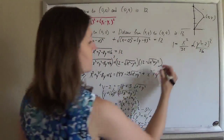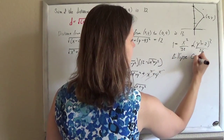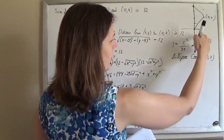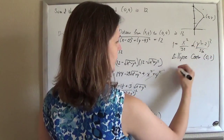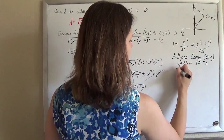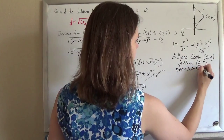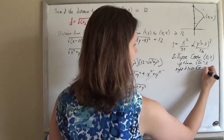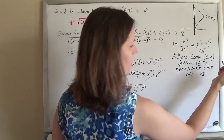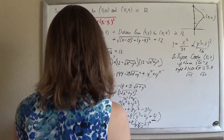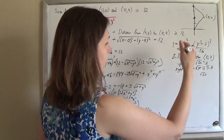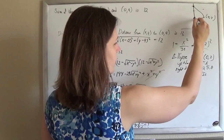And that's our standard form of an ellipse. We can see that this is an ellipse with center (0, 2), opening up and down by the square root of 36, which is 6, and right and left by the square root of 32, which is a little less than 6 — about 5.8, somewhere between √25 and √36. So the ellipse has a center of (0,2), and you don't have to graph it, but we could if we wanted.